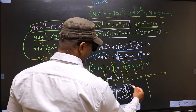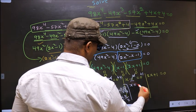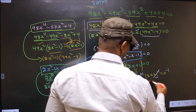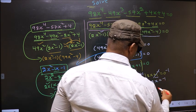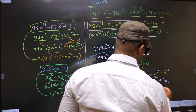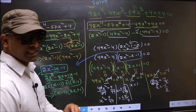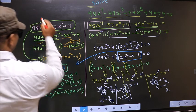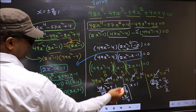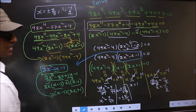From x minus 1 equal to 0, add 1 to get x equal to 1. From 2x plus 1 equal to 0, subtract 1 to get 2x equal to minus 1, then divide by 2 to get x equal to minus 1/2. So the x values we got are x equal to plus or minus 2/7, x equal to 1, and x equal to minus 1/2. This is our answer.